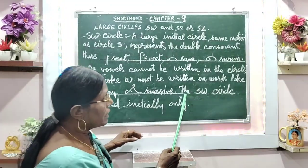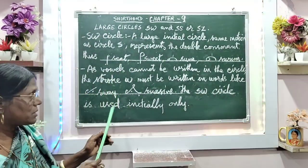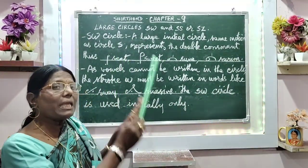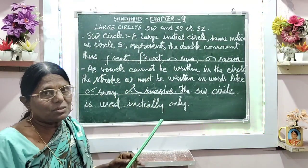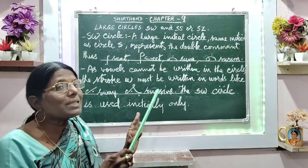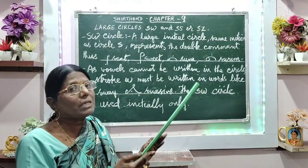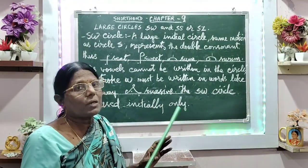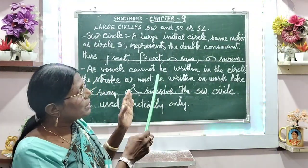The SW circle is used only in the initial stage — nowhere else. Because in other positions, we cannot give the vowel placing, and the vowel cannot be indicated properly.